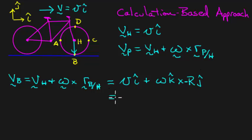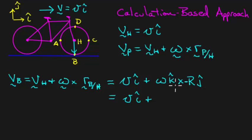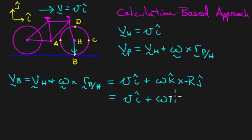Working out the cross product: we have V in the i-hat direction, plus the cross product. k-hat cross j-hat is minus i-hat, but we have a minus sign here, so this vector cross product gives omega times R in the positive i-hat direction.